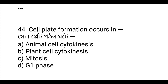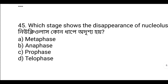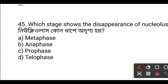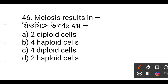Question: During which stage does the nucleus disappear? Meiosis produces 4 haploid cells from a diploid cell — all genetically different. Option B is the correct answer.